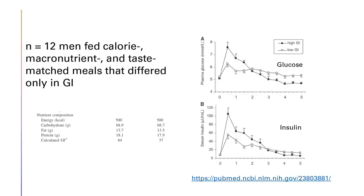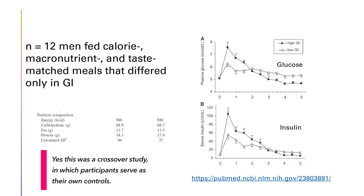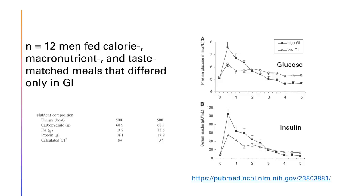I want to share a really cool study. They took 12 men in what I believe was a crossover study — meaning the same men were fed two diets on separate occasions, with each person serving as their own control. They were given two different meals: identical in calories, macronutrients, and taste. The only thing that differed was the glycemic index. The scientists manipulated the glycemic index of the carbs so one was a high-GI meal to spike blood sugar and the other was a low-GI meal. As you can see in graph A, the high-GI meal spiked blood sugar as expected, and the low-GI meal didn't spike it nearly as much.